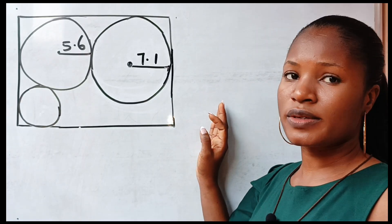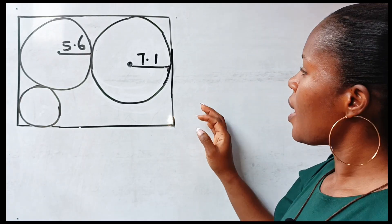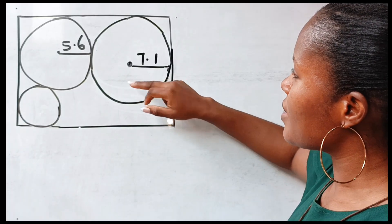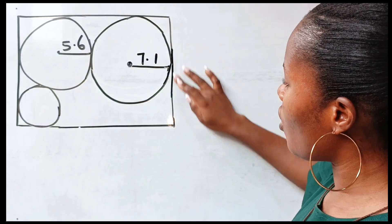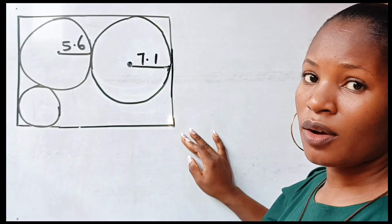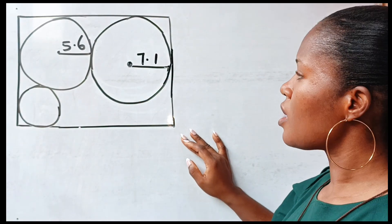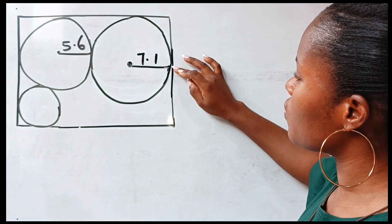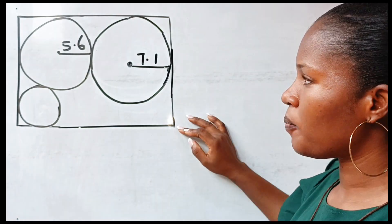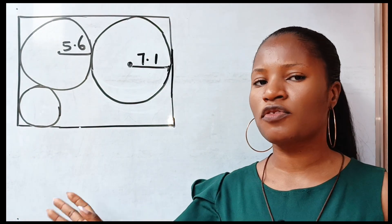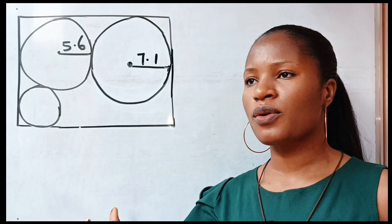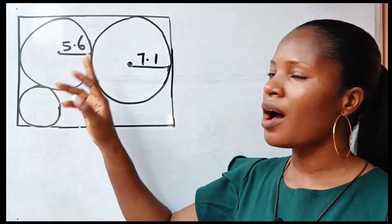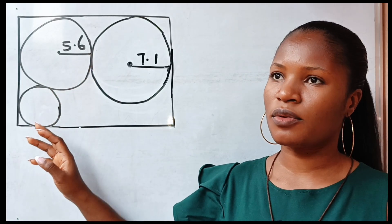This diagram is not drawn to scale and the center of this particular circle is at the center of this rectangle. These are the only information given to us. Now let's dive in and get the area of this circle.